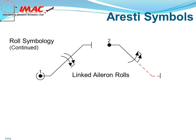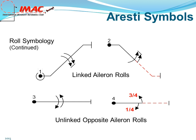Linked or continuous rolls: the arrows of the linked rolls will be connected by a line. Figure one is two continuous aileron rolls. Figure two is one and one-half continuous rolls — note that the flight changed from positive to negative. Unlinked similar rolls will always be in the opposite direction. Figure three is one 360-degree aileron roll followed by an opposite 360-degree aileron roll; the pilot has the option to roll in either direction as long as the second roll is in the opposite direction. Figure four is a combination of partial rolls: a quarter roll followed by an opposite three-quarter roll.